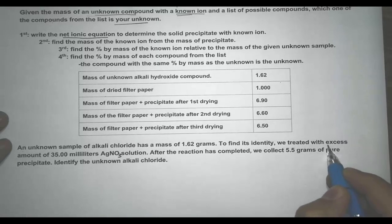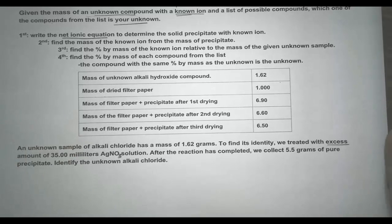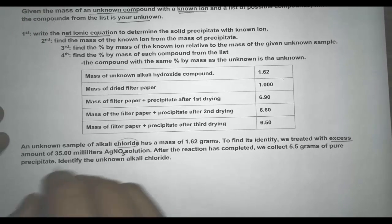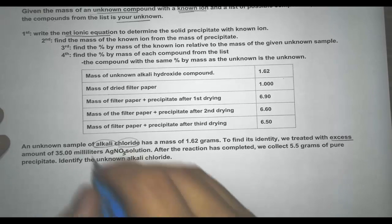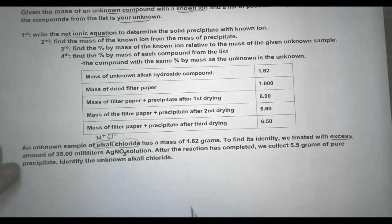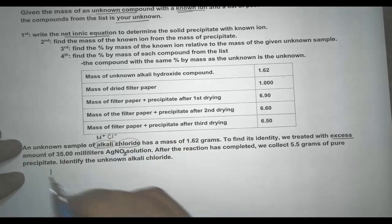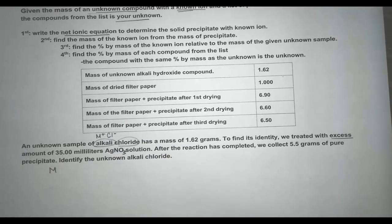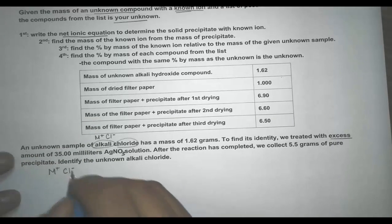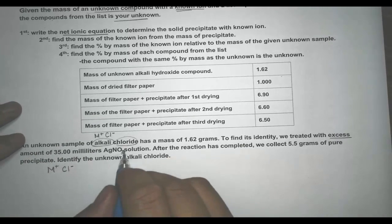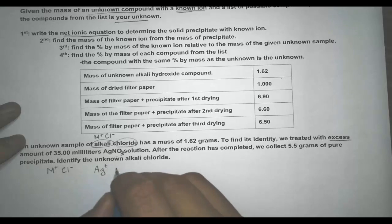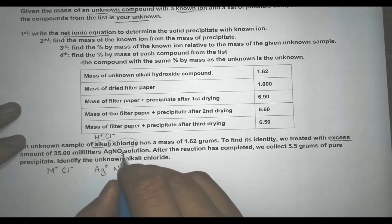The word 'excess' means you are treating with an excess reactant so that all the chloride ions will be completely reacted. Alkali is in group 1A, so we know it is an alkali metal with a charge of +1. Chloride has a minus charge. Any compound with a group 1 alkali will be soluble, so we have a soluble solution. Here we have silver nitrate — any compound with nitrate will be soluble — so we have Ag⁺ and NO₃⁻.